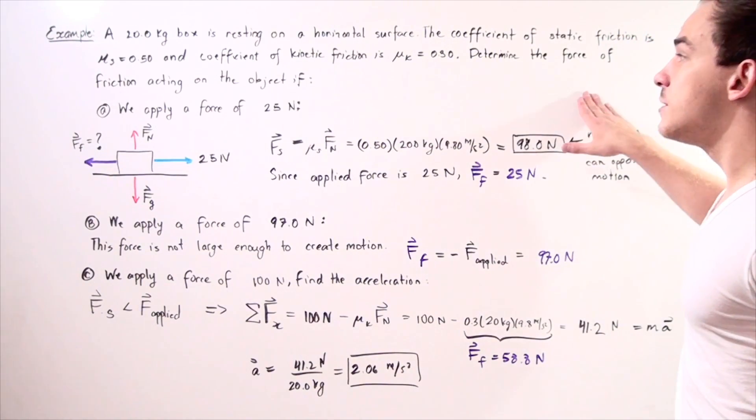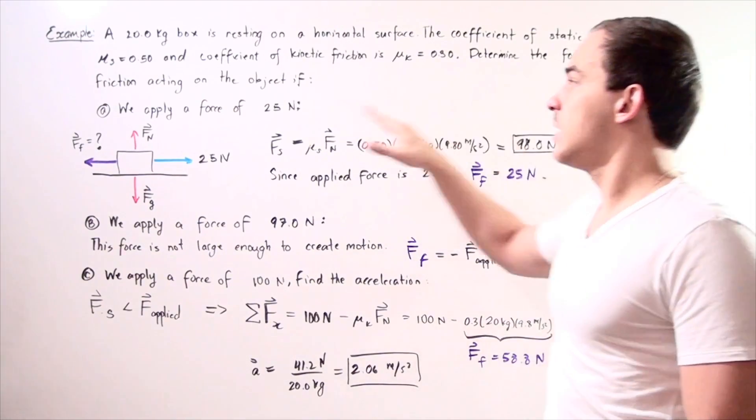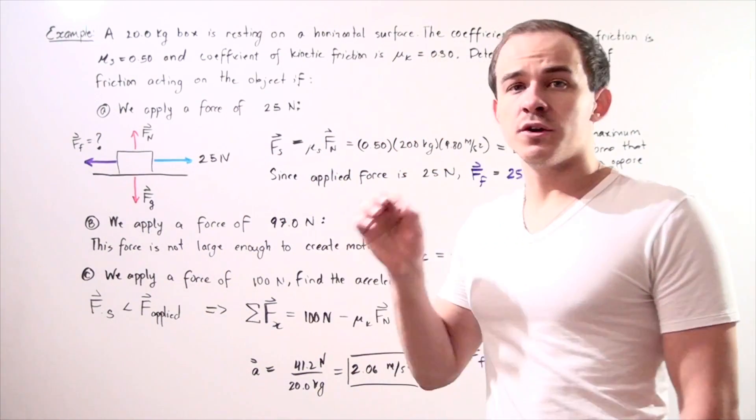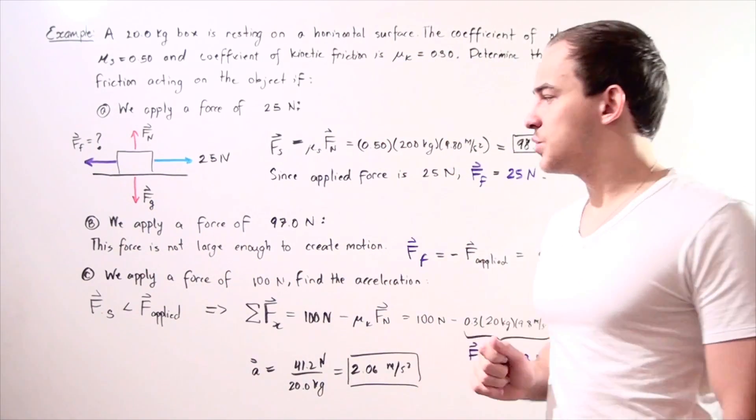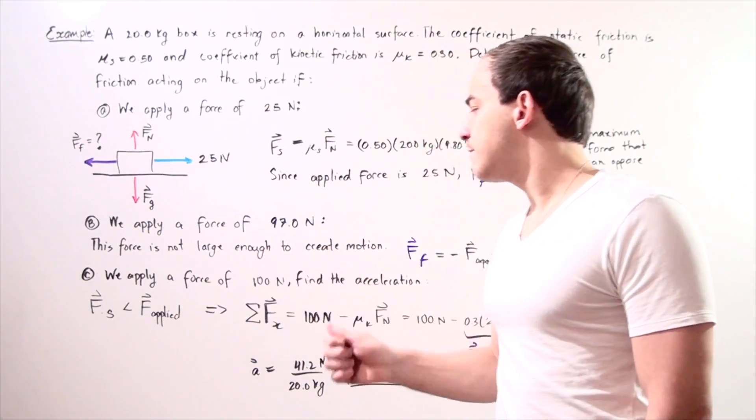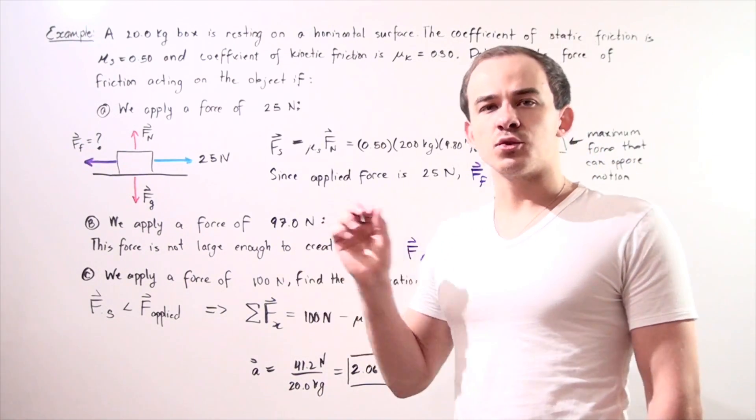We want to determine the force of friction acting on our object if A, we apply a force of 25 newtons, B, we apply a force of 97 newtons, and C, we apply a force of 100 newtons, and in this case, we need to find our acceleration.